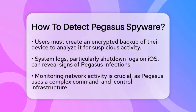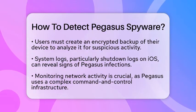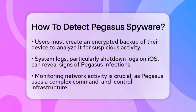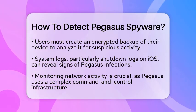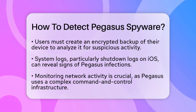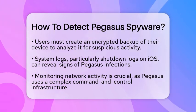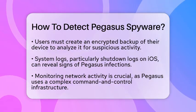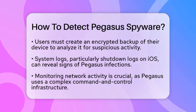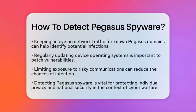For practical steps, start by creating encrypted backups of your smartphone data — this preserves forensic evidence. Next, use specialized tools like the Mobile Verification Toolkit or other cybersecurity vendor tools to analyze backups and logs for Pegasus indicators. Additionally, monitor your device for unusual behavior, such as unexpected reboots or slowdowns. Regularly updating your device's operating system is also important to patch vulnerabilities that Pegasus might exploit.